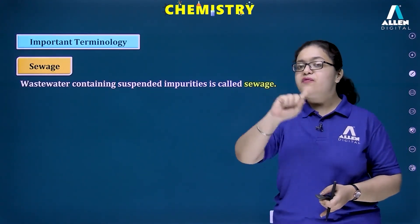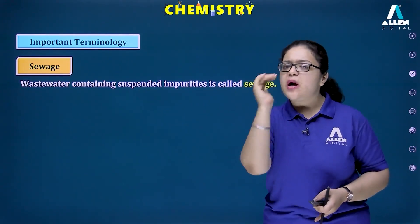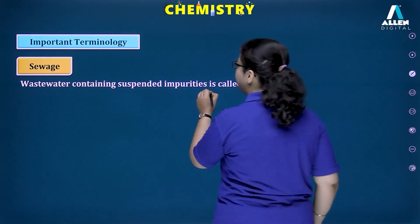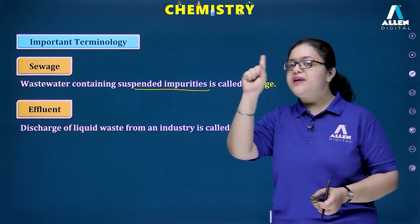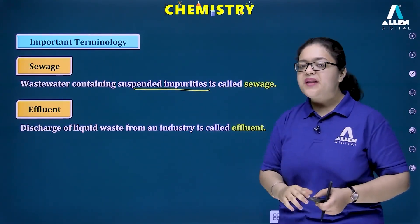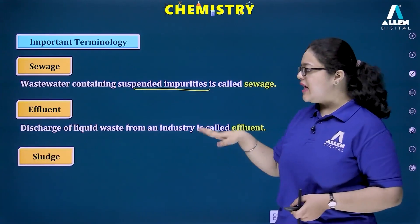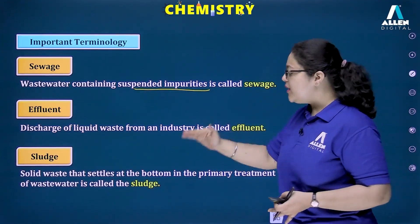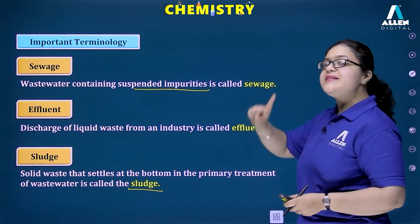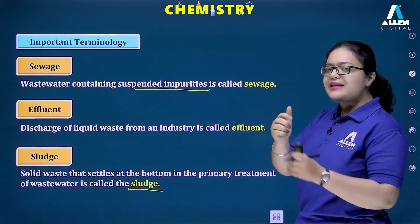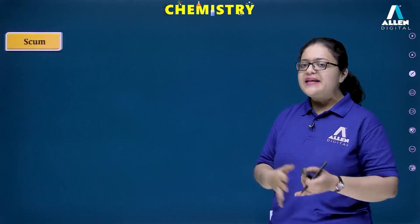Let's discuss some important terminology before understanding the wastewater treatment process. Sewage is the dirty, used water released from different sources containing suspended impurities. Effluent is the discharge of liquid waste from industries directly released into water bodies — it contains harmful chemicals. Sludge is the solid waste that settles at the bottom during primary and secondary treatment; it can be dried and used as a natural fertilizer.